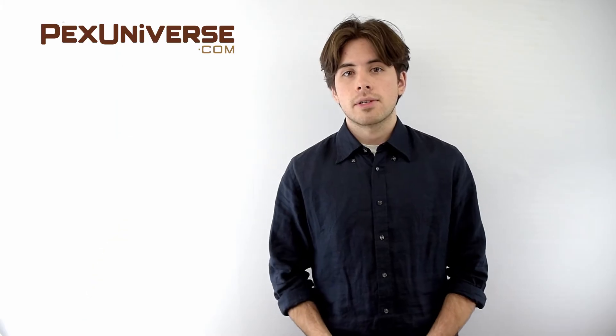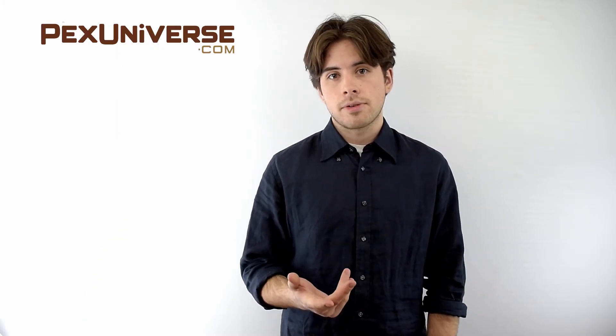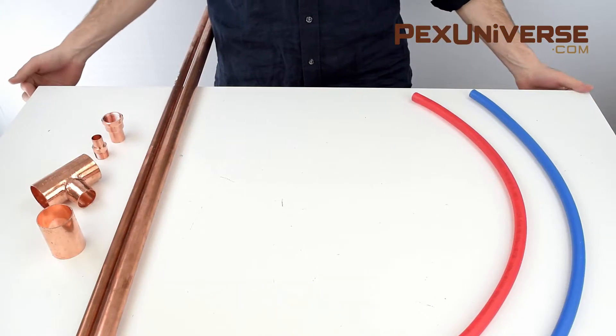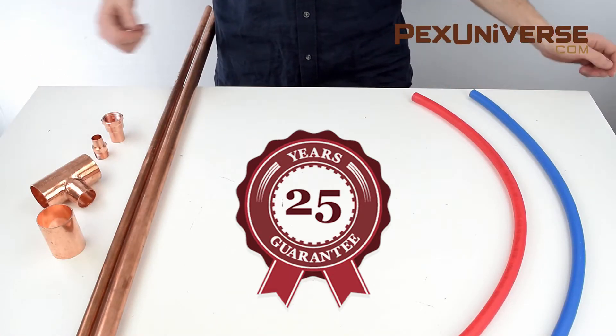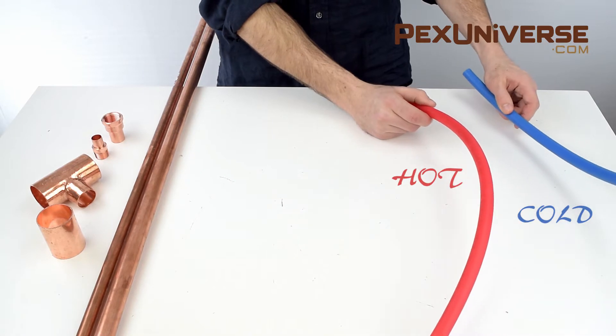Hi, I'm Alex with PEX Universe. Today I'm going to show you why PEX tubing is preferred over copper pipe. First of all, PEX tubing from PEX Universe comes with a 25 year warranty and it's color-coded so you can tell the difference between hot and cold lines.